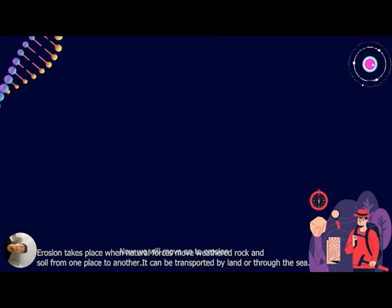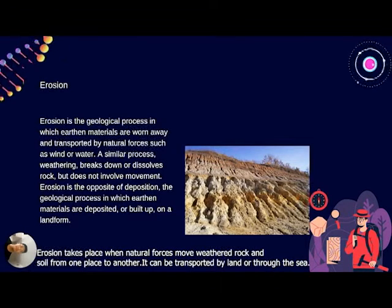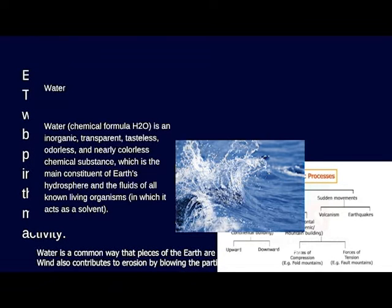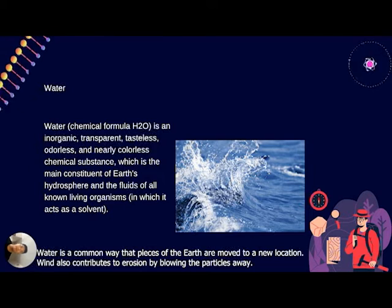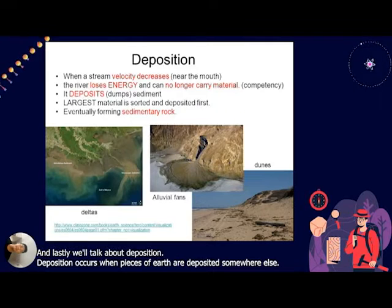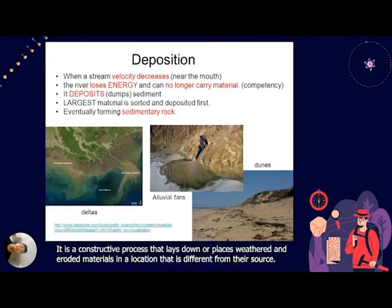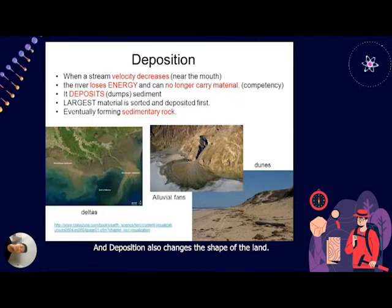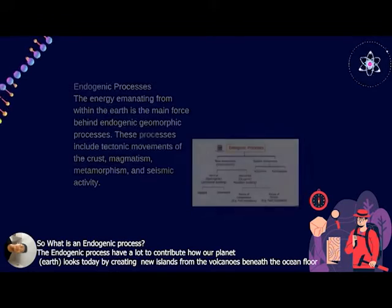Now we will move on to erosion. Erosion takes place when natural forces move weathered rock and soil from one place to another. It can be transported by land or through the sea. Water is a common way that pieces of earth are moved to a new location; wind also contributes to erosion by blowing particles away. Lastly, deposition occurs when pieces of earth are deposited somewhere else. It is a constructive process that places eroded materials in a location different from their source, and deposition also changes the shape of the environment.